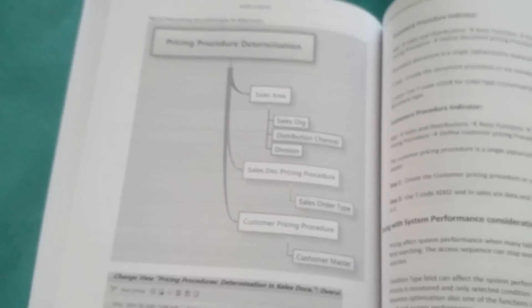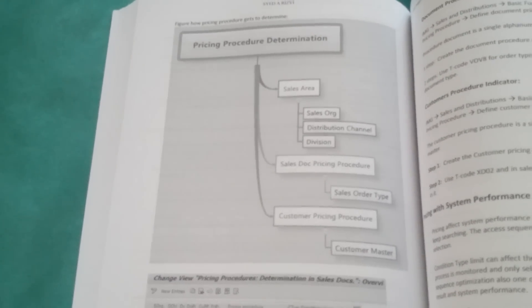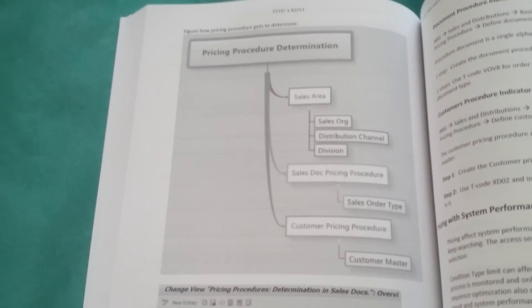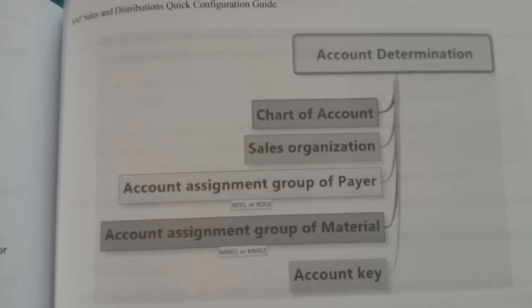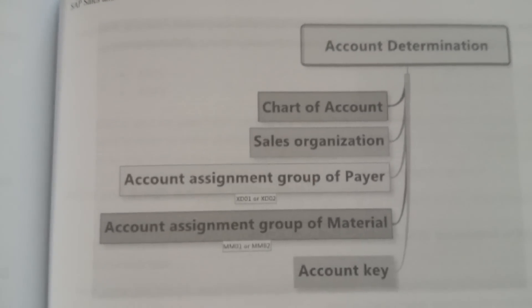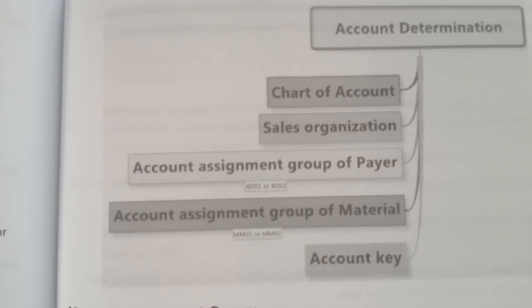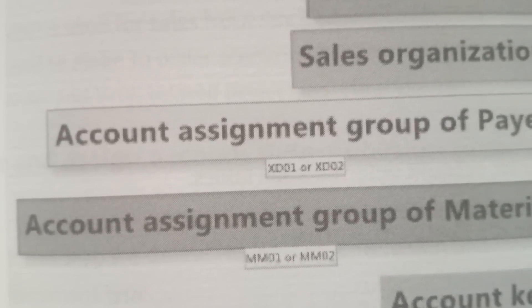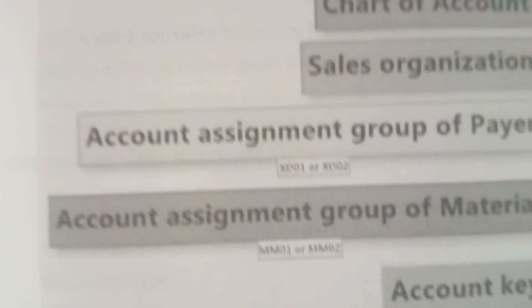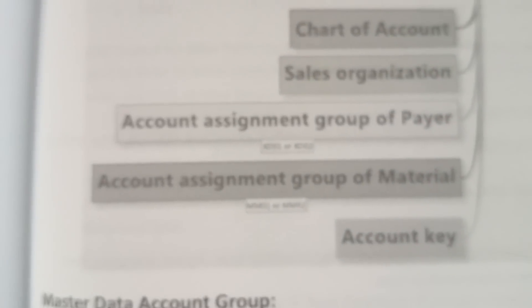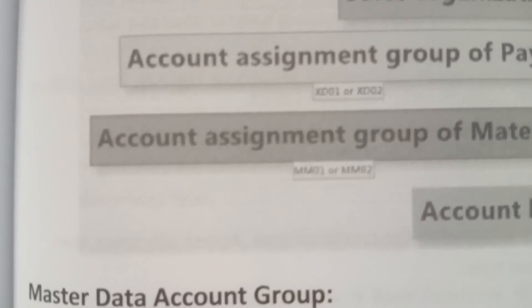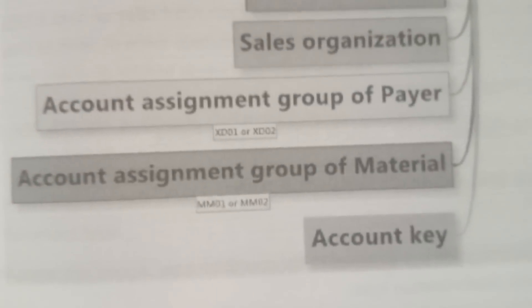This is just one example of how the book is written for the reader to understand and grasp the subject. Another example: account determination — how an account gets determined. Account is determined based on chart of accounts, sales organization, and account assignment group. Looking closer, the customer master uses transaction XD01 for the account assignment group, material uses MM01 or MM02, along with the account key.